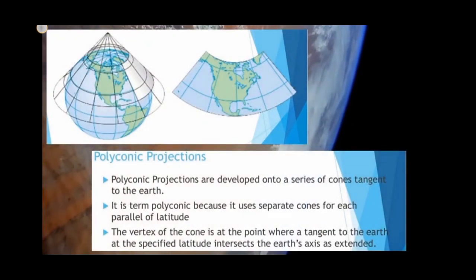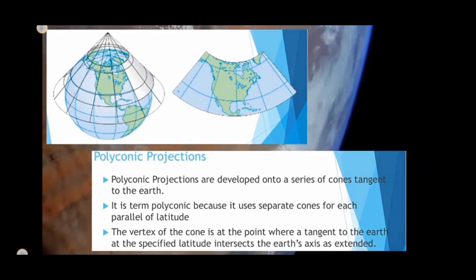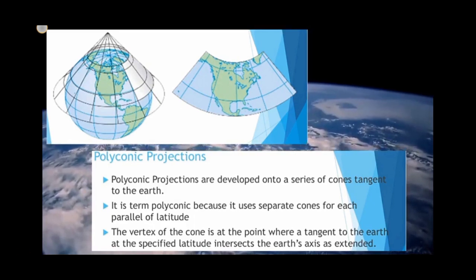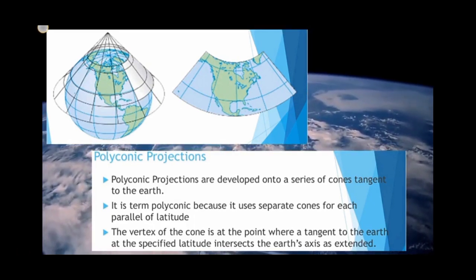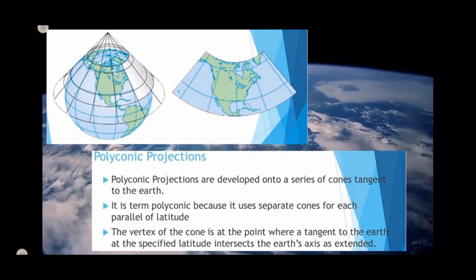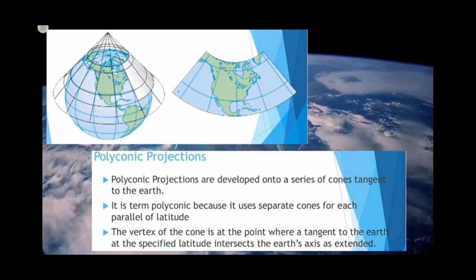Polyconic projection is developed into a series of cones tangent to the Earth. It is called polyconic because it uses a separate cone for each parallel of latitude. The vertex of each cone is at a point where the tangent of the Earth at that latitude intersects the Earth's axis as extended.